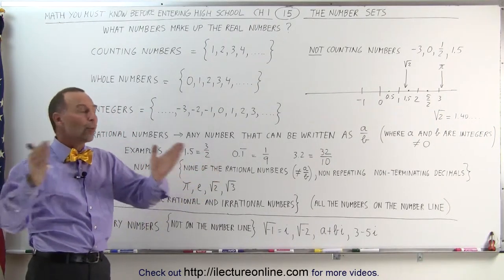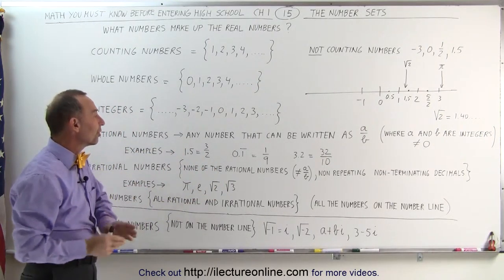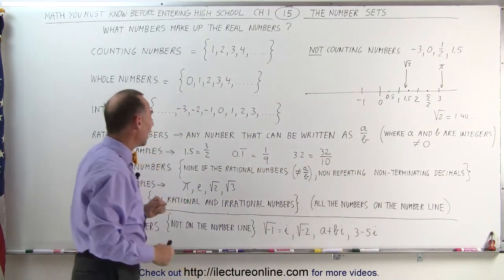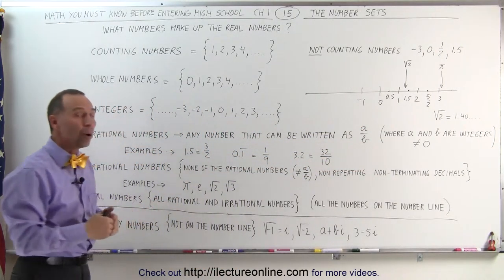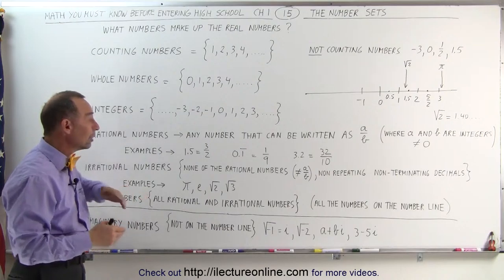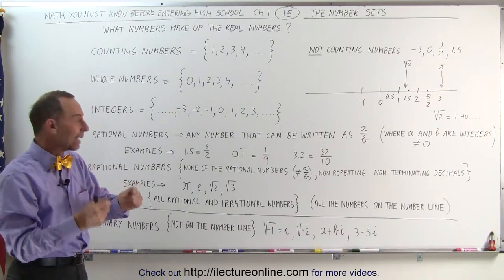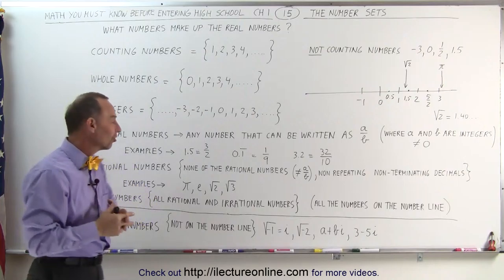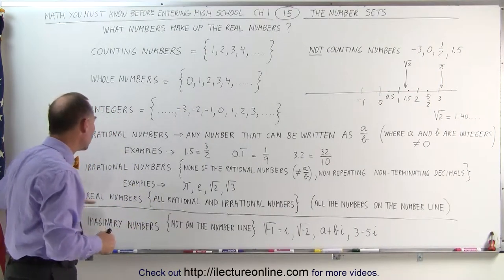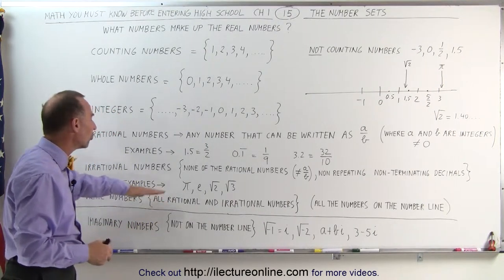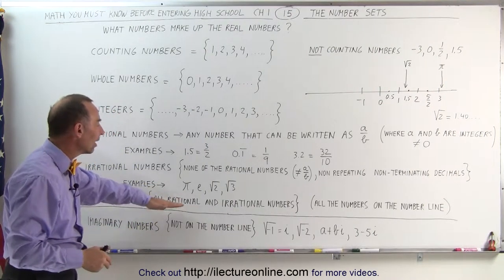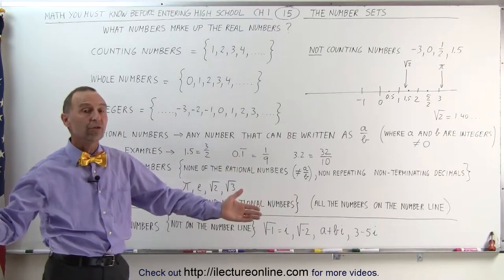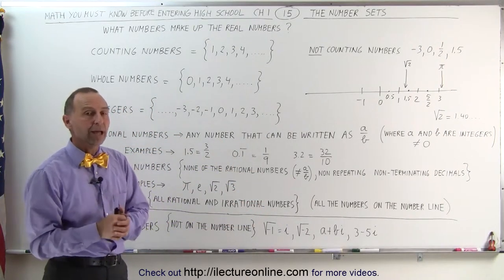Now when we combine all the rational numbers, which can be written in the form A over B, and we add all the irrational numbers — we know they're on the number line, we just can't find the exact spot — and we combine them all together, those are considered the real numbers. The real numbers are all the rational numbers and all the irrational numbers combined. They are all the numbers on the number line.